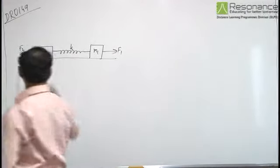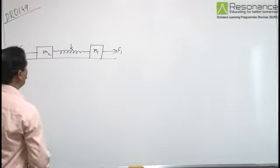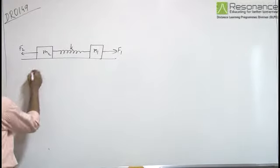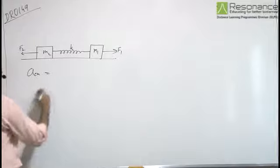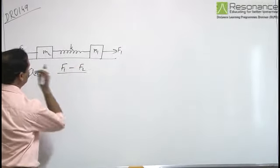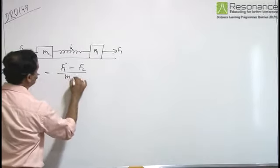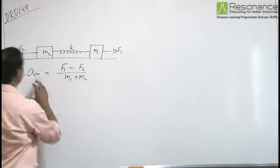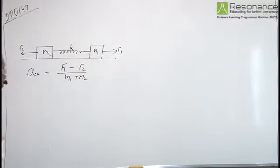Let us first find the acceleration of the center of mass. The acceleration of the center of mass is the net force F1 minus F2 divided by the net mass M1 plus M2.